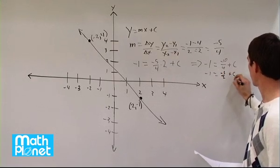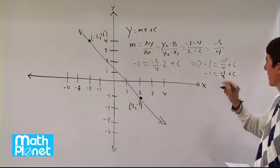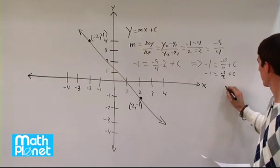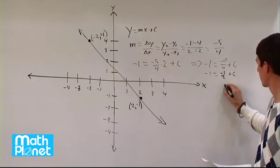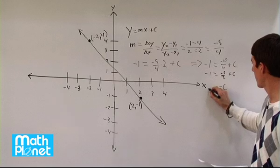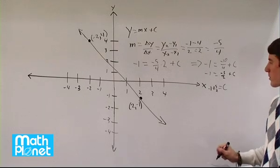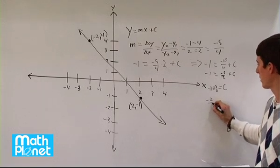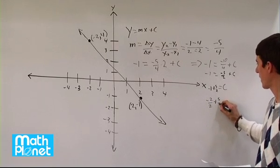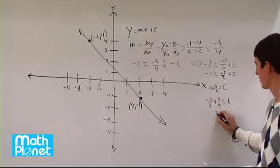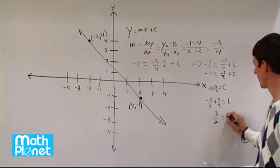Now we want to have the c all by itself. We'll add five-halves to both sides, and then we'll be done. Negative one plus five-halves. We need to put this in the fractional form too. Negative two-halves plus five-halves equals c. Five minus two is three-halves equals c.